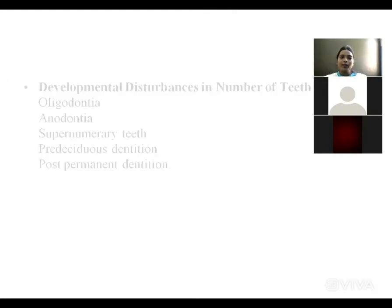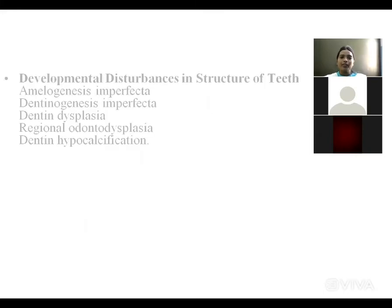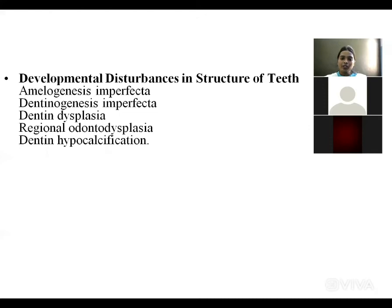Developmental disturbances in number of teeth include oligodontia (few teeth present), anodontia (absence of teeth), supernumerary teeth, pre-deciduous dentition, and post-permanent dentition.